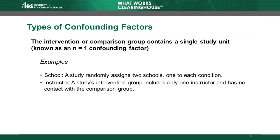Next, we will discuss different types of confounding factors. One of the most common types occurs when a single study unit, such as a teacher, classroom, school, or district, aligns with one study condition. The WWC refers to this as an N equals one confounding factor. To avoid this type of confounding factor, a study must have at least two units in each condition. In group design studies with two conditions, this means the minimum analytic sample size is four. Anything less would result in an N equals one confounding factor.